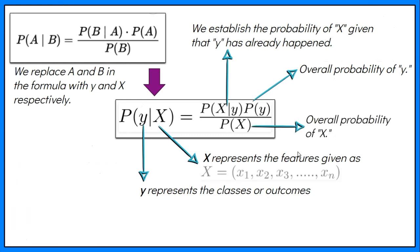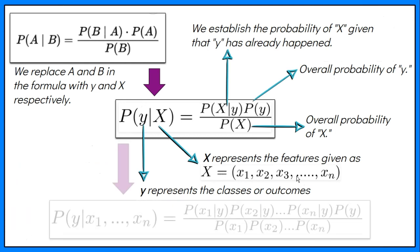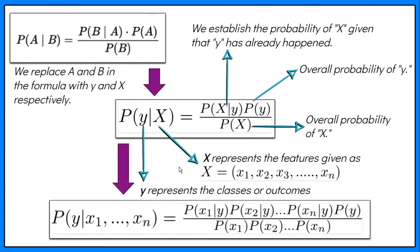X is given as X equals X1, X2, X3, and so on. Here, X1, X2, and so on represent the features. By substituting for X, we get the Naive Bayes formula.